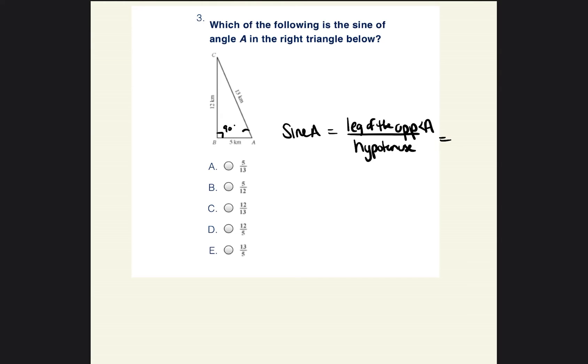So angle A is right here. That's the A. So the leg of the opposite of angle A. So just so you're familiar, these lines, this line, this line, and this line, these are all legs of the triangle. So the leg that's opposite of angle A would be this leg. So that is equal to 12 kilometers over the hypotenuse. So remember, the hypotenuse is opposite of the right angle. So it would be over 13. So the sine of angle A would be 12 over 13.